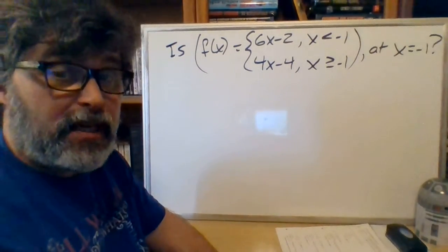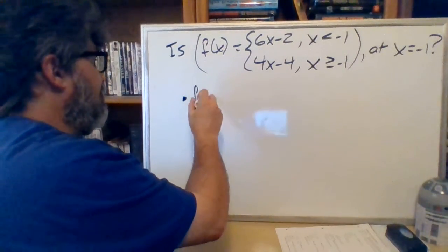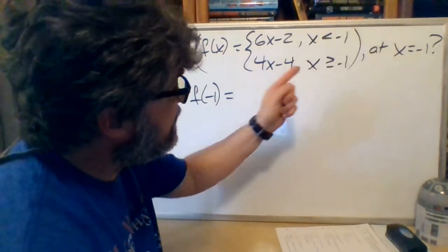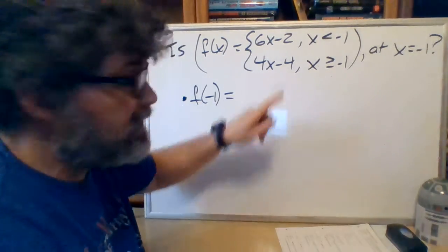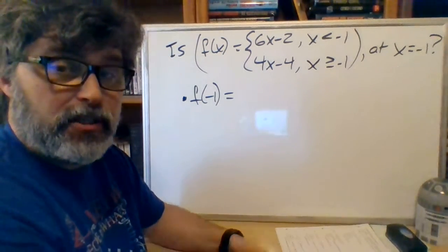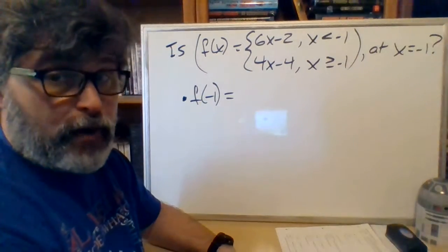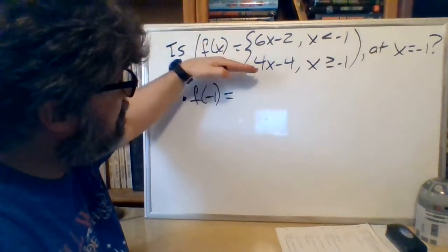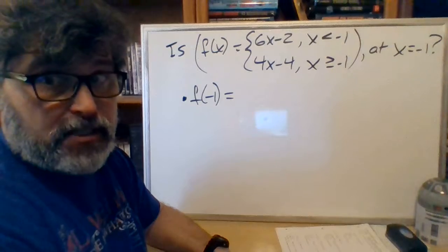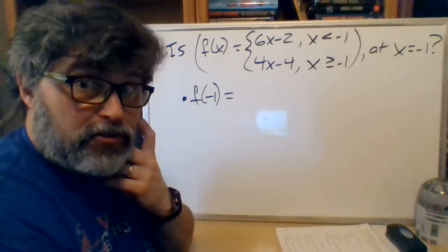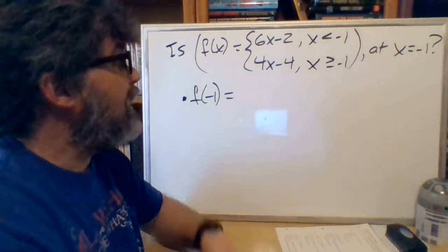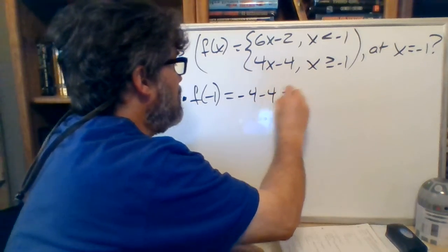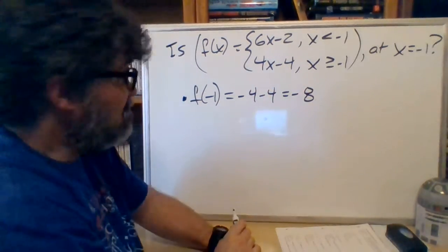We have to do our three steps. Step number one: f(negative 1). The second equation has the equal sign, so that's the one I use to evaluate the function at negative 1. Please do not evaluate it at both — if you evaluate a piecewise function at both equations, that tells me you don't understand piecewise functions. Just use the one where the number actually applies, which gives negative 4 minus 4 equals negative 8.